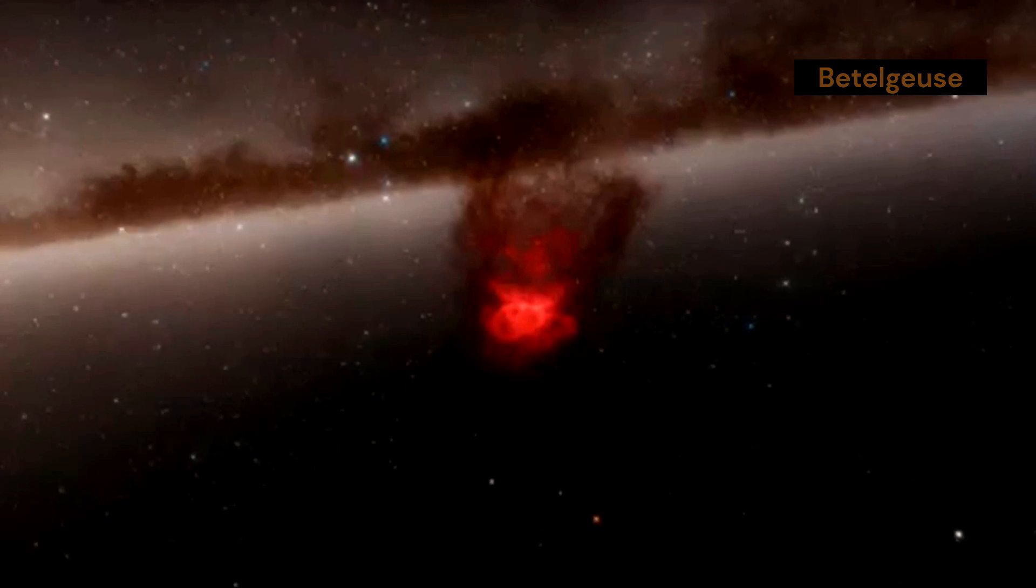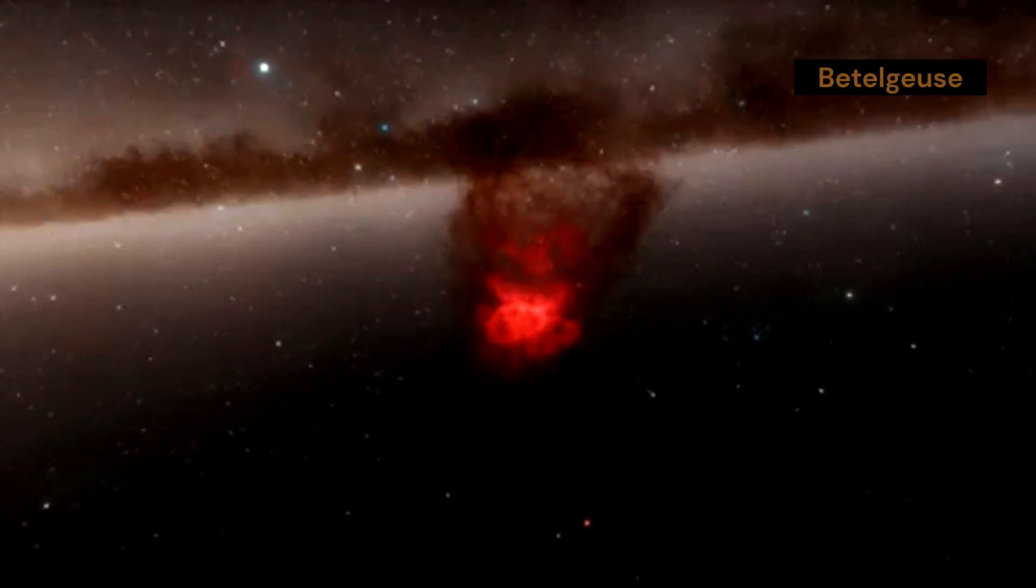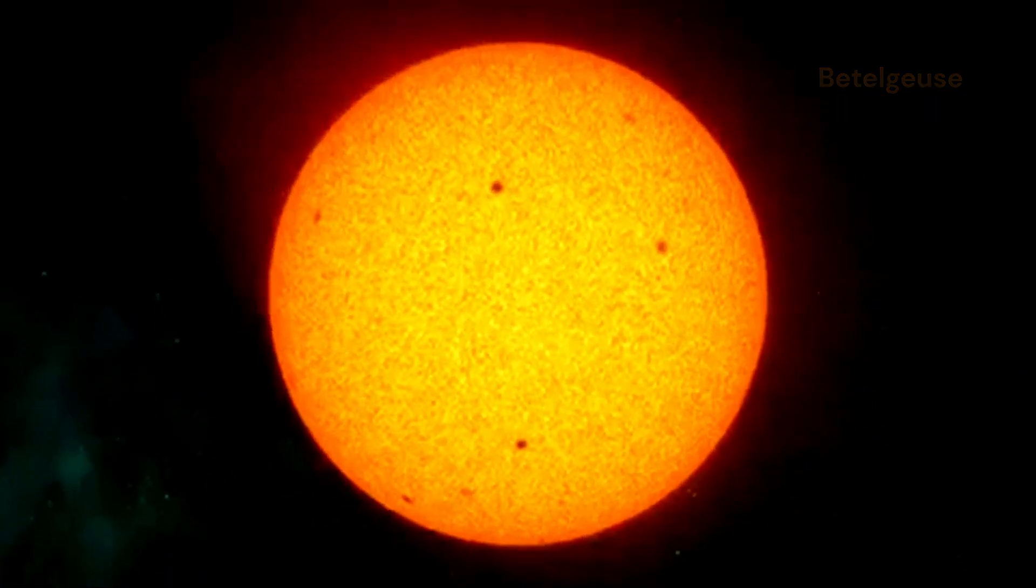One star in Orion shines with a reddish light. This star is known as Betelgeuse, and it stands out due to its distinct color and brightness. That's Betelgeuse, a star much larger and older than our own sun.